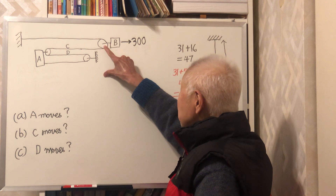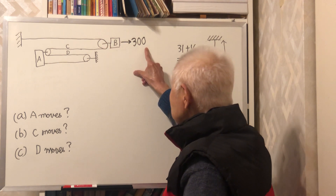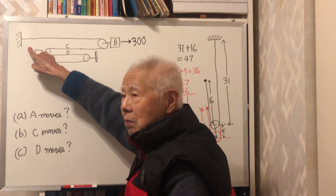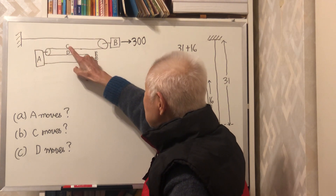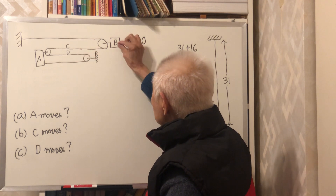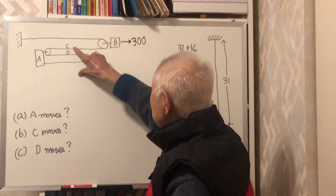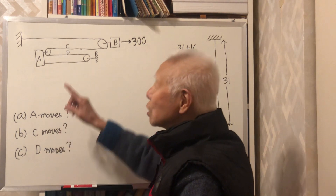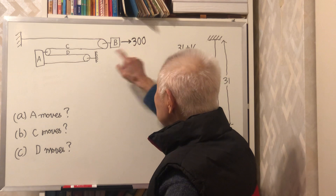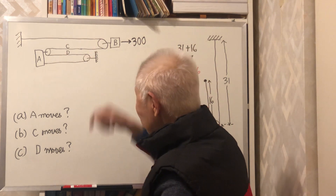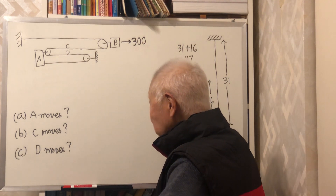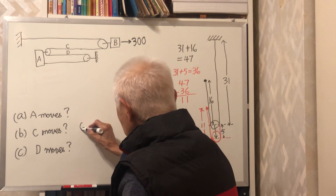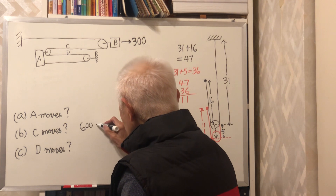Now applying this to the main problem: block B moves 300 units. This side of the rope is fixed, so C will move in this direction. How much? Double this amount — 600. So the answer for part C is 600 units in this direction.